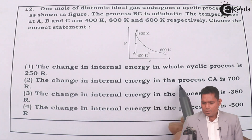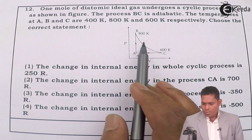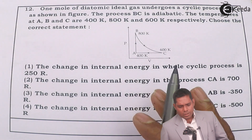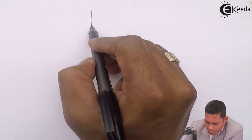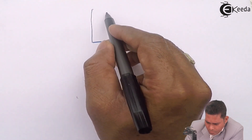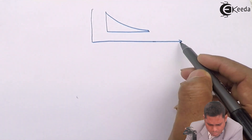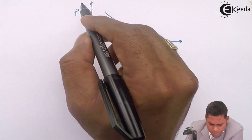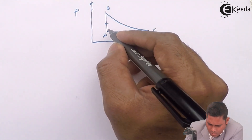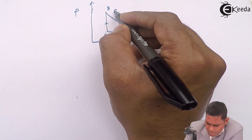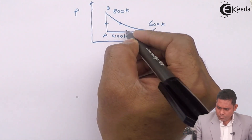We need to find the change in internal energy in each process — A to B, B to C, and C to A. On the PV diagram, the volume axis is horizontal and the pressure axis is vertical. Point A is at 400 K, point B at 800 K, and point C at 600 K. This is the cyclic process.